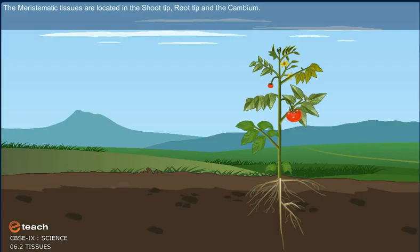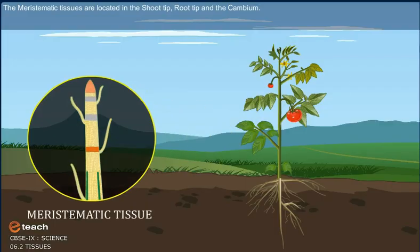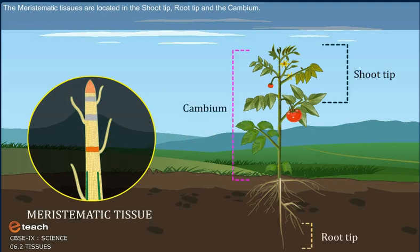Location: The meristematic tissues are located in the shoot tip, root tip, and the cambium.